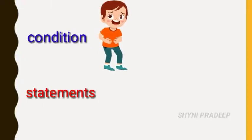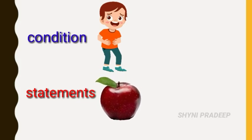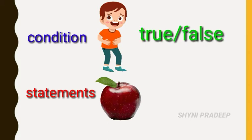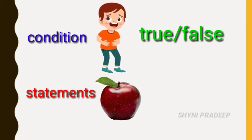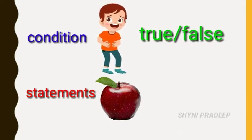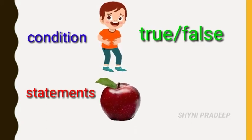For example: you are feeling hungry — this is the condition. Eat an apple — this is the statement. Are you feeling hungry now? For this question you will say either yes or no. Yes means true, no means false. You have to check this condition; it returns either true or false. If it returns true, then you have to execute the statement — which means eat an apple.